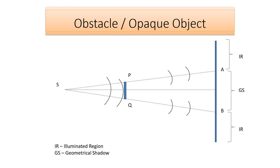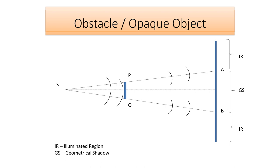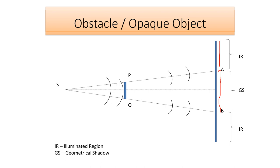In this slide, between the point source and the screen, we have placed an opaque object or obstacle PQ. Here the region AB, we are expecting complete darkness, whereas above A and below B, we are expecting a bright region.